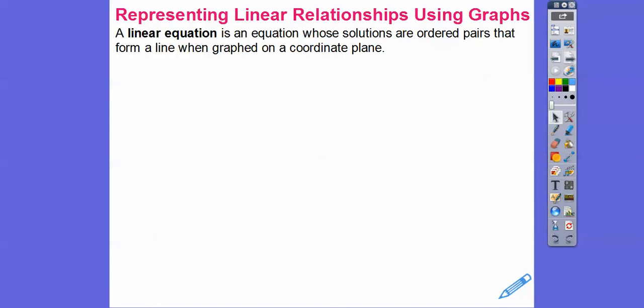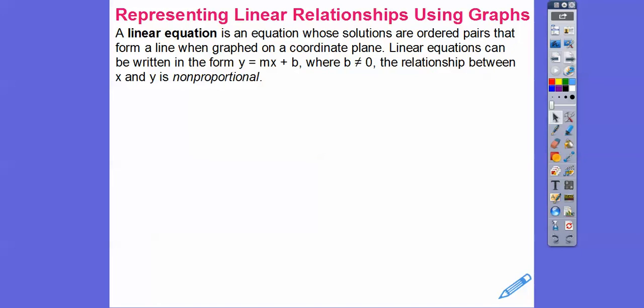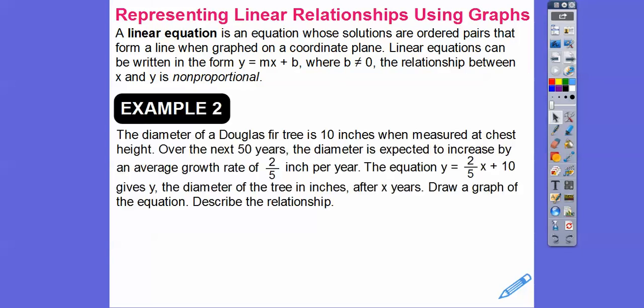A linear equation is an equation whose solutions are ordered pairs that form a line when graphed on a coordinate plane. Linear equations can be written in the form y equals mx plus b. If b is not zero, then it is called non-proportional but it is still linear. If it was just y equals mx, or y equals mx plus zero, then it would be a proportional relationship.